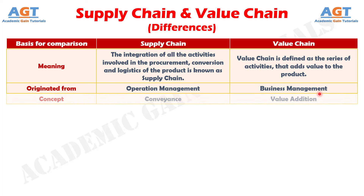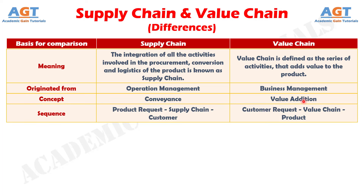Number 3: supply chain activities include the transfer of material from one place to another. On the other hand, value chain is primarily concerned with providing value for price, product or service.